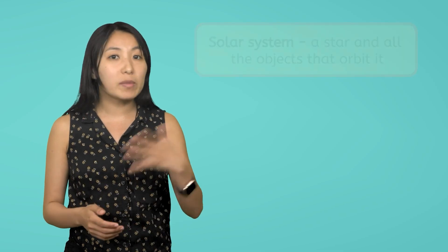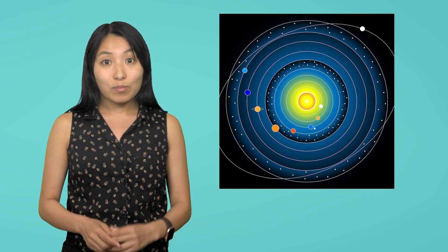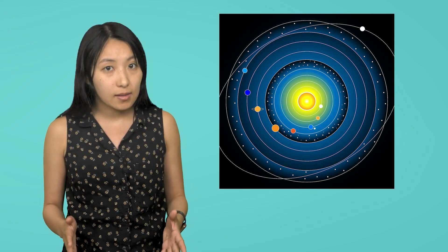Planets, moons, asteroids, comets, and more. And unlike when Aristarchus suggested it, people thought this model made sense.